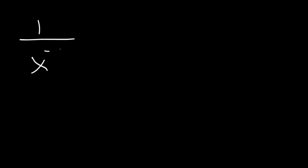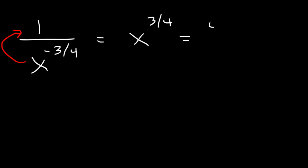What about 1 over x raised to the negative 3 fourths? Because the exponent is negative, if we move x to the top, the exponent becomes positive. So this is x to the positive 3 over 4, which becomes the 4th root of x cubed.